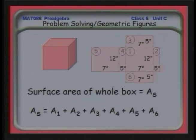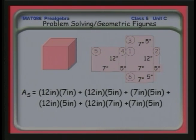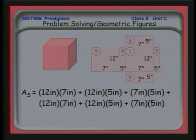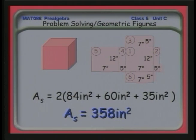Here's the surface area of the box — we're going to have six different areas. The area equals length times width. Twelve times seven is area one; twelve times five is area two, and so forth. I rearrange to show we've doubled them: twice each of the three different sides, since we have two of each. Doing the math, I find the total area of all those sides is 358 square inches.